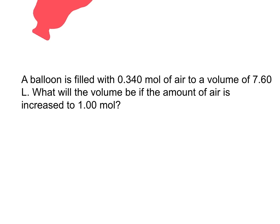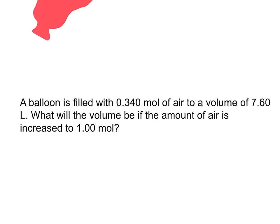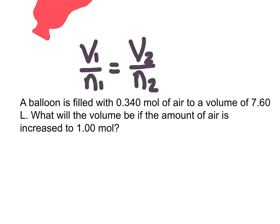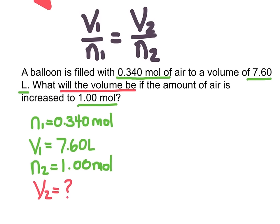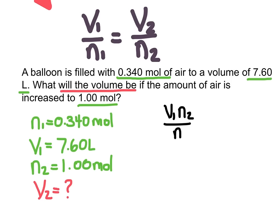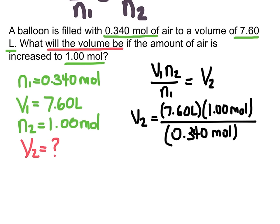Let's look at an example. The equation relates an initial set of conditions to a changed set, using volumes V1 and V2 and amounts N1 and N2 in moles. The problem states: a balloon is filled with 0.34 moles of air to a volume of 7.6 liters. What will the volume be if the amount of air is increased to 1 mole? Rearranging gives V2 = (V1 × N2) / N1, which equals 22.4 liters.